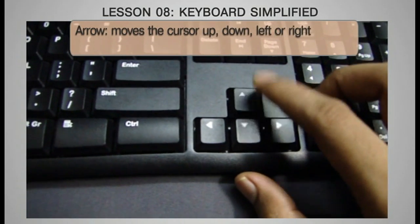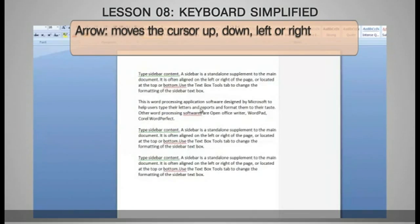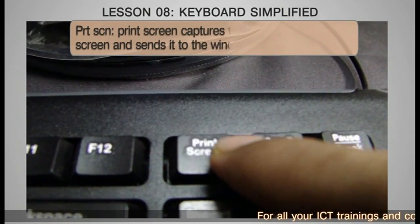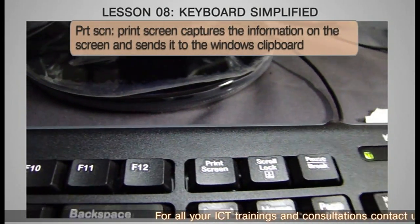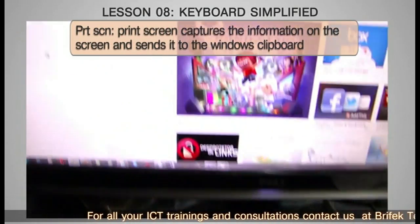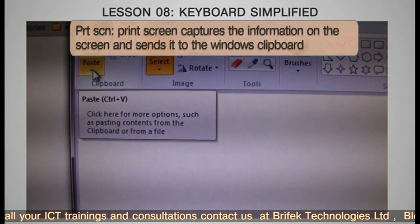Arrow keys: move the cursor up, down, left, or right. PRTSCN or Print Screen: captures the information on the screen and sends it to the Windows clipboard.